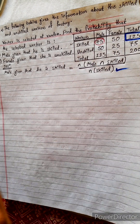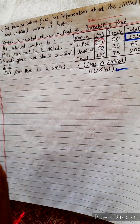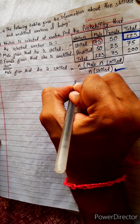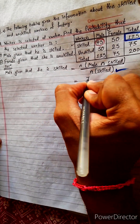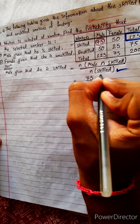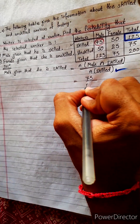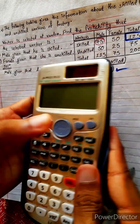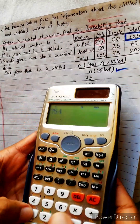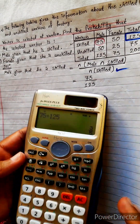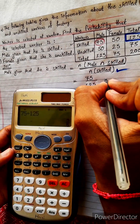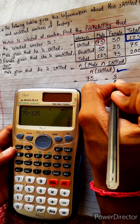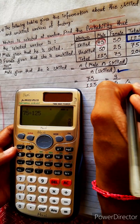Understood? Very easy. 75 divided by skilled means 125. So 75 divided by 125 equals 3 by 5. The answer is 3/5.